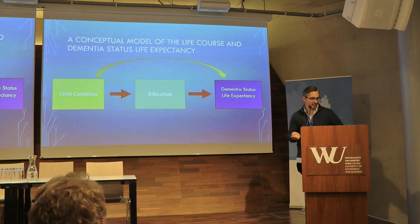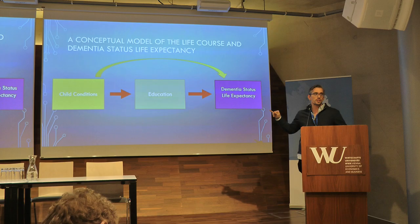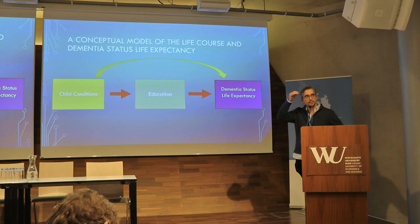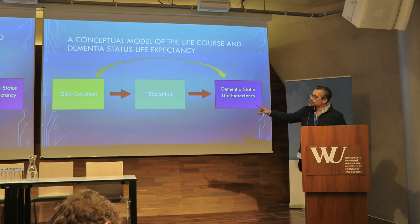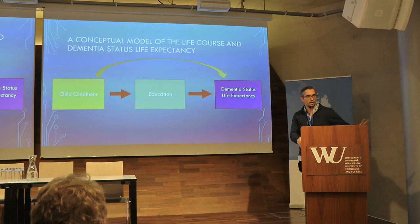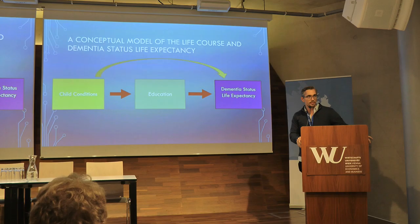I wanted to give a broad conceptual model. Basically we have childhood conditions — originally child health and child adversity. We don't present results for child health because it was found to be insignificant once you add education. The child adversity measure was still significant and had a large effect. So child conditions lead to education, which then leads to dementia status life expectancy — two different processes: mortality and dementia, which combine into dementia status.